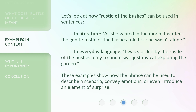Let's look at how Rustle of the Bushes can be used in sentences. In literature: as she waited in the moonlit garden, the gentle rustle of the bushes told her she wasn't alone. In everyday language: I was startled by the rustle of the bushes, only to find it was just my cat exploring the garden. These examples show how the phrase can be used to describe a scenario, convey emotions, or even introduce an element of surprise.